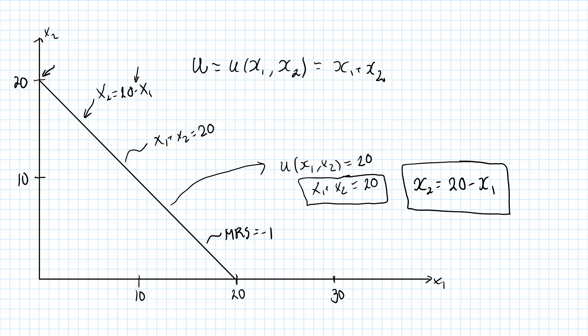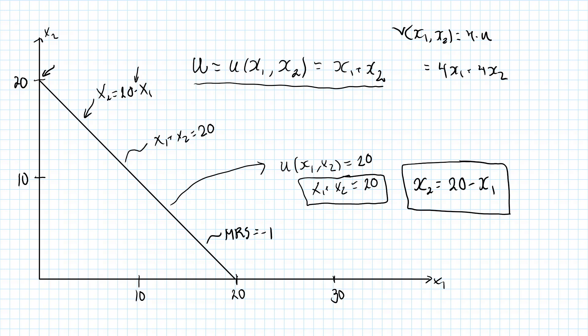Keep in mind that this is just one possibility of representing these preferences. Any monotonic transformation of this utility function will work equally well. For example, the utility function v(x1, x2) = 4 times u — just making up a number here — gives 4x1 plus 4x2. This utility function will represent exactly the same preferences.